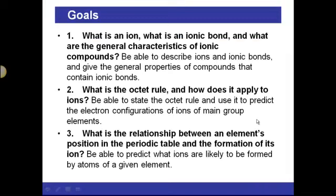Some of the goals for Chapter 3 include providing a definition for an ion. You should be able to describe ions and ionic bonds and give the general properties of compounds that contain ionic bonds. You should be able to identify the octet rule and how it applies to ions.